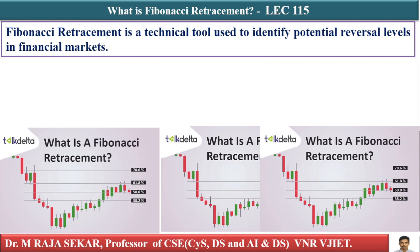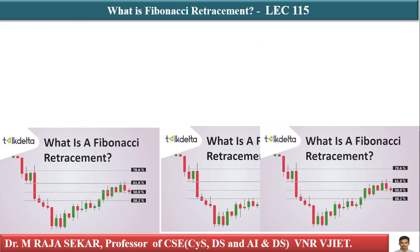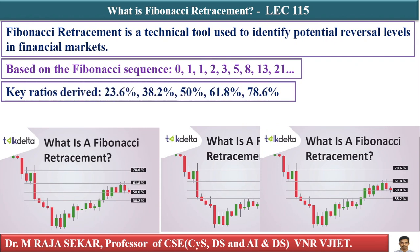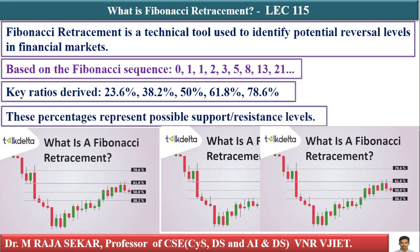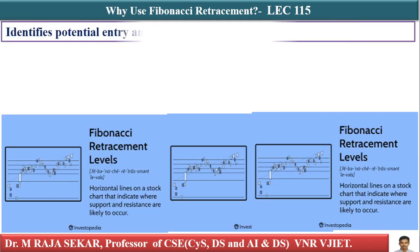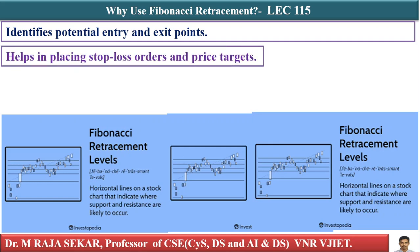Fibonacci retracement is a technical tool used to identify potential reversal levels in financial markets. After pulling back, you are getting a reversal. It is based on the Fibonacci sequence. The key ratios are 23.6 and 38.2, which we have seen. These percentages represent possible support and resistance levels. They are helpful for understanding entry and exit positions and for keeping stop loss orders and price targets.